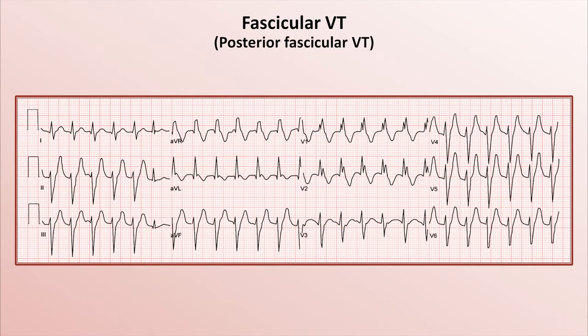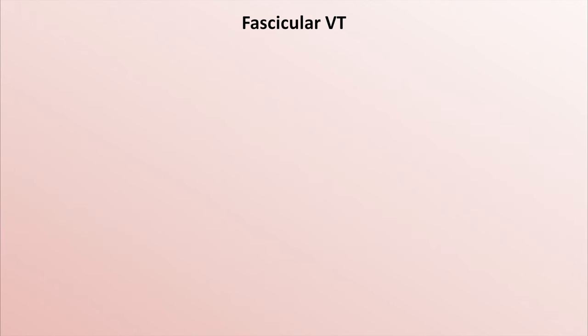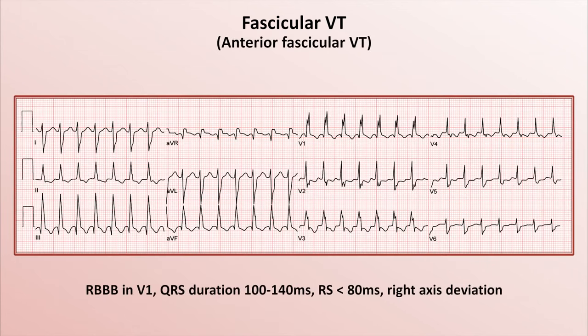Here's a posterior fascicular VT. We see a classic right bundle branch block pattern in V1, a relatively narrow QRS complex — in this case about 120 ms — the RS interval is under 80 ms, and there is a left axis deviation that's almost at negative 90 degrees. And here is an anterior fascicular VT that looks similar with the exception that the axis is now right deviated around positive 120 degrees.